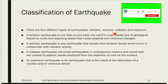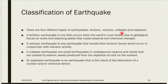The next type is collapse. Collapse might happen due to mining. When you are mining minerals, you detonate to explode the rocks below the earth or at the surface. When making a tunnel, you explode, and the adjacent soil gets disturbed, making a small vibration and generating waves. This is much smaller than a volcanic earthquake.